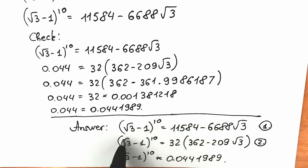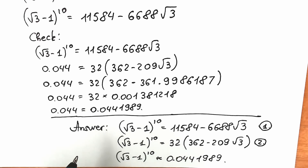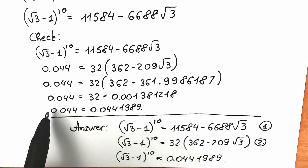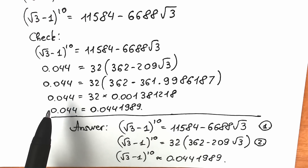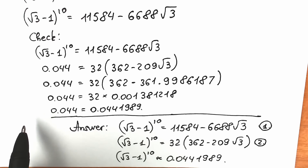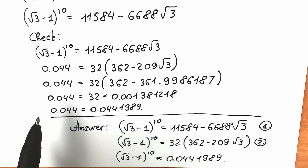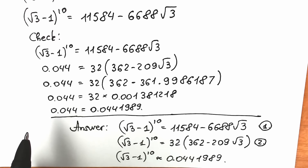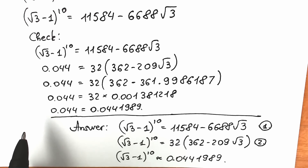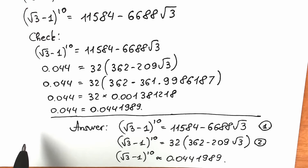So our final answer: (square root of 3 minus 1) to the 10th power equals 11584 minus 6688 times square root of 3, or equivalently 32 times (362 minus 208 times square root of 3), with an approximate decimal value of 0.044198089. I hope you understand this approach. Write your solution and suggestions in the comment section. Thank you everyone for your support and time — if this video was helpful, don't forget to like and subscribe. Take care of yourself and love math!